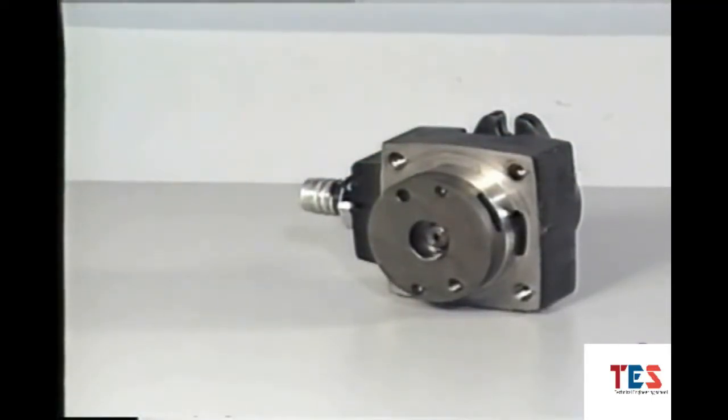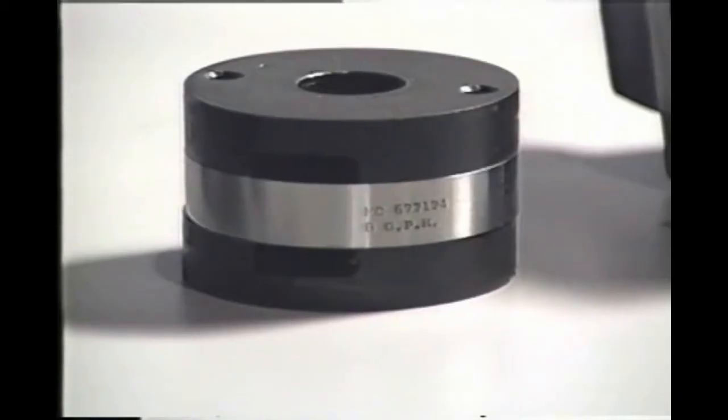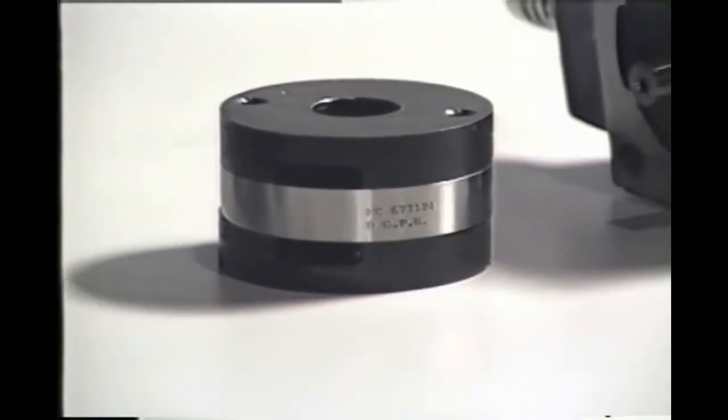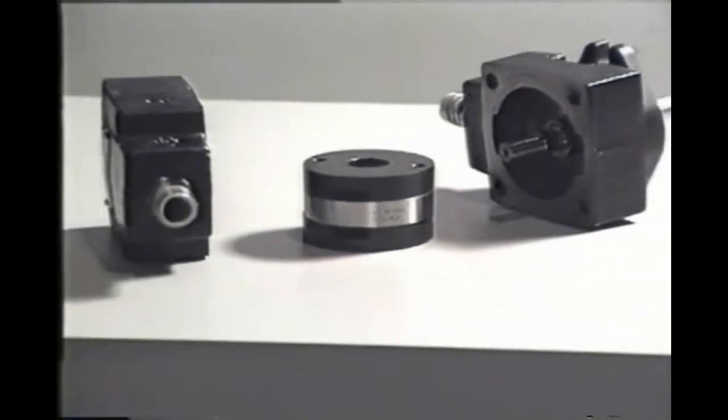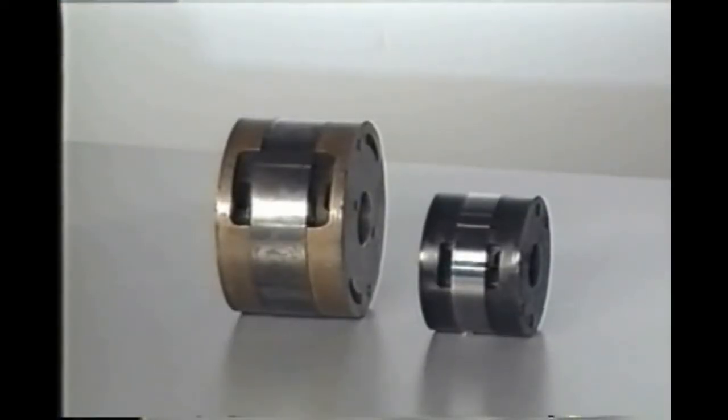When this portion of the pump wears out, it can be repaired by simply replacing the whole cartridge assembly. Within certain limits, the pump volume can be increased or decreased by replacing the cartridge assembly with another one of larger or smaller volume but with the same outside dimensions.